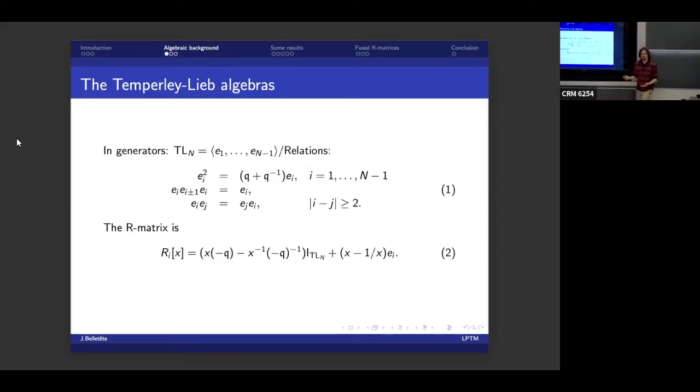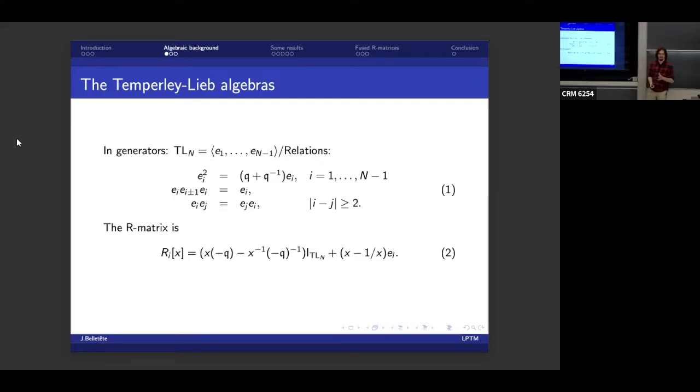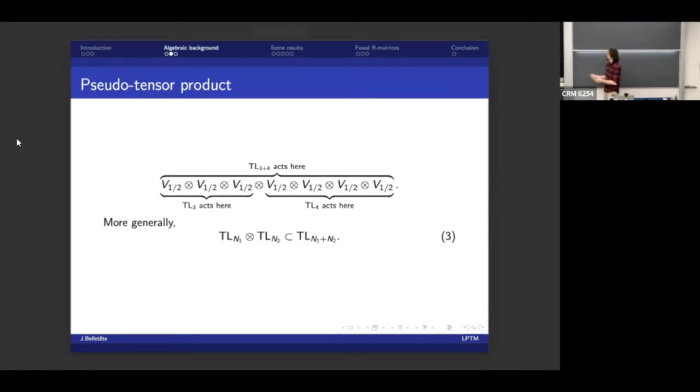The q here is the same q as in U_q SL_2. And the R matrix is just this, so it's a multiple of the identity plus a multiple of the E_i. The R matrix in U_q SL_2, it becomes singular at a certain point. So the E_i's are basically the R matrix evaluated at the singular point.